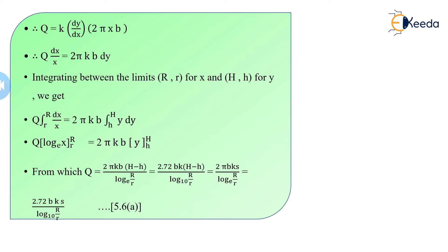When only the main well is given, we can use this equation to find the discharge value. Capital H minus small h is nothing but the drawdown S. Substituting, the equation becomes Q = 2πBK × S / ln(R/r). If we want this equation in terms of log base 10, it becomes Q = 2.72BKS / log₁₀(R/r).